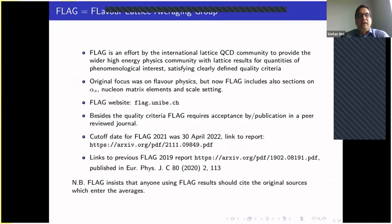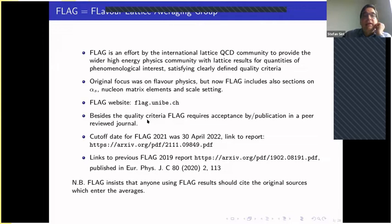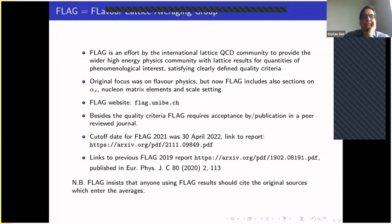There is a FLAG website. FLAG only uses results that, besides passing the quality criteria, are also accepted by or even published in a peer-reviewed journal — it is not enough to have a preprint on the archive. They can still be mentioned in the report, but they will not enter any averaging. The cutoff date for FLAG 2021 was last year in April, and links to the report and to the previous FLAG 2019 report are available.